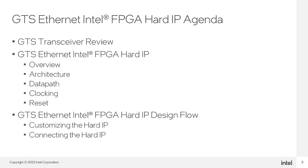We will begin with a quick review of the GTS transceiver, then look at the GTS Hard IP in more detail. After an overview, we will look more closely at the architecture and how it is configured for Ethernet data paths, finishing with clocking and reset structures. We will end by looking at the design flow, including how to customize the Hard IP and make the appropriate connections to your application logic.